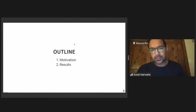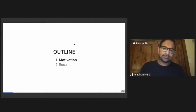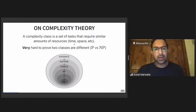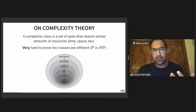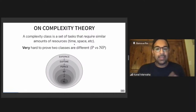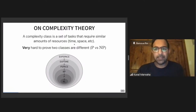I'll break this into two parts. I'll talk about the motivation for about half the talk and then talk about some results. Feel free to stop me if you have any questions. When we talk about complexity theory, we're often talking about a set of tasks that require similar amounts of resources like time or space. For example, P is the class of tasks that require a polynomial amount of resources with the input size. And NP is the amount that you can check with that much resource. But it's often very hard to prove that two classes are different — for example, P versus NP is still unknown.